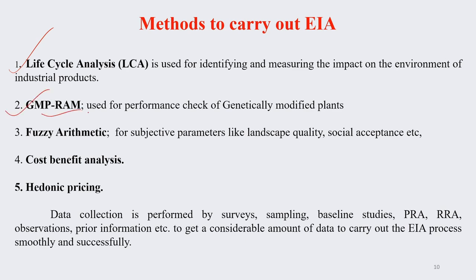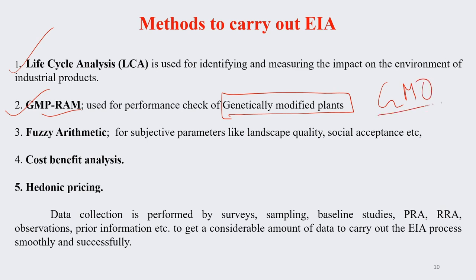LCA is used for identifying and measuring the impact of any activity on the environment. GMPRAM is used for performance check of genetically modified plants — GMO — which is a hot topic. In the last 10 years we have heard a lot of deliberations nationally, regionally, and internationally about genetically modified organisms, and the genetically modified plant is one of them.